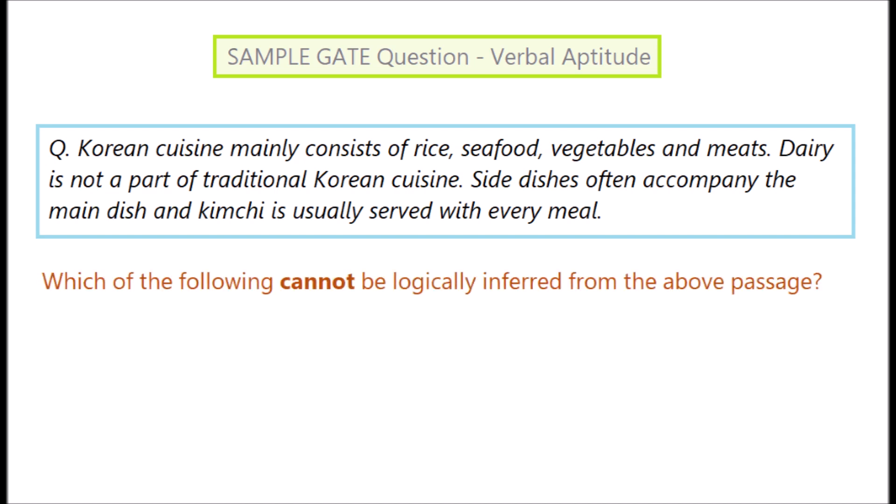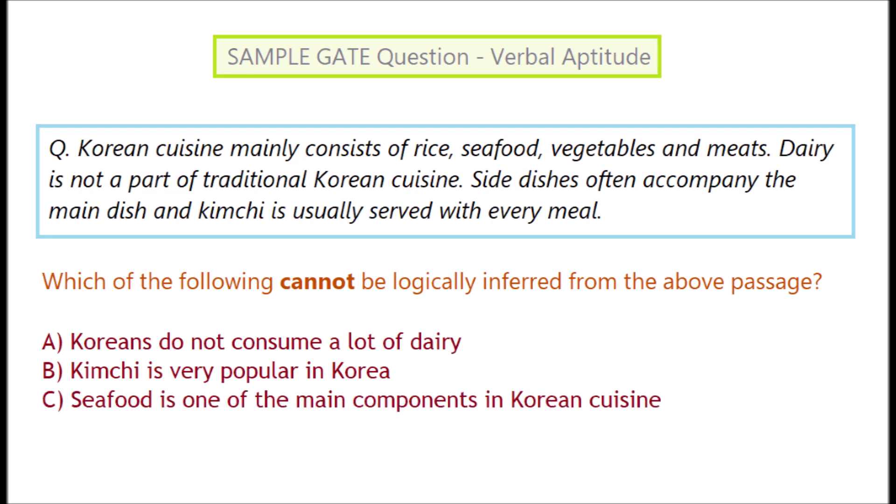Which of the following cannot be logically inferred from the above passage? Option A: Koreans do not consume a lot of dairy. Option B: Kimchi is very popular in Korea. Option C: Seafood is one of the main components in Korean cuisine. Option D: Main dish is often served solus in Korea.